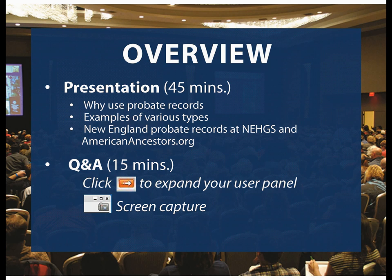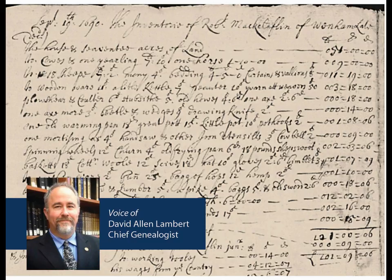Thank you, Ginevra, and welcome to today's webinar on New England probate records. A lot of the traditions of the Old World were carried over here to the shores of America, and our ancestors have a variety of different records to search — probate is just one of them that I find most useful. Probate records are located in a variety of different places — online, still in courthouses, some have been transcribed, some have been lost to fire and neglect — but the adventure of your genealogy involves probate records and you'll be even more fulfilled.